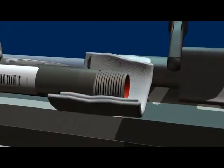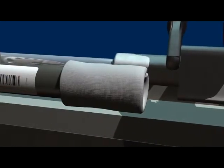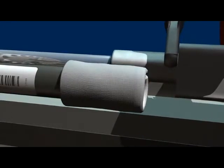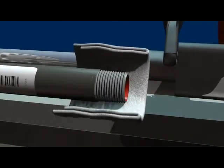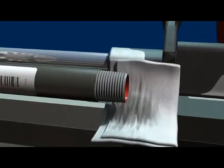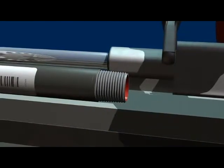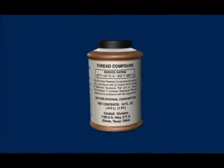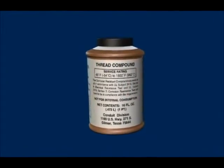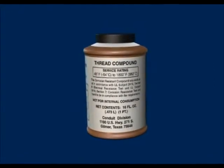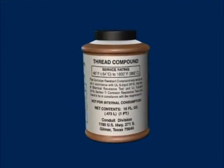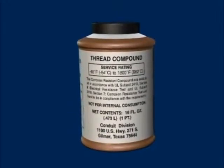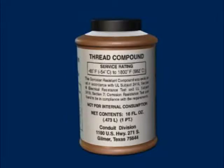Degreasing is important to ensure that the thread compound will adhere to the unprotected steel. Bare steel resulting from field cut threads is the most vulnerable area to corrosion in any conduit system. Therefore, thread compound must be used on all field cut threads and internal reams. Proper use of thread compound will ensure a reliably sealed installation. Thread compound has been developed as a protection for bare metal and is available in pint cans.